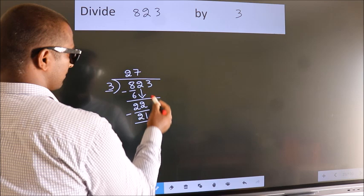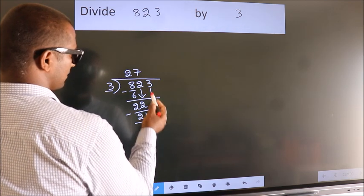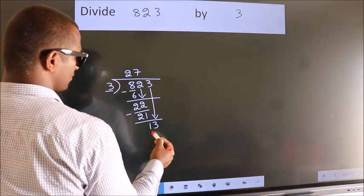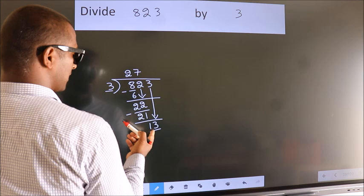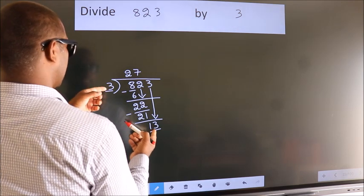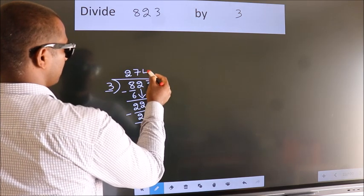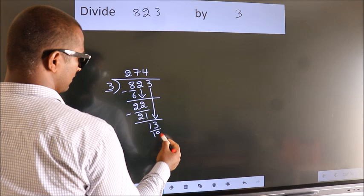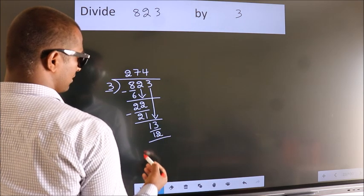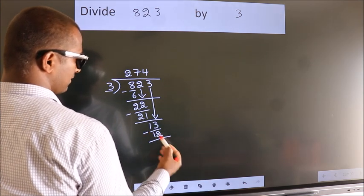After this, bring down the beside number. So 3 down, so 13. A number close to 13 in 3 table is 3 4's 12. Now we subtract. We get 1.